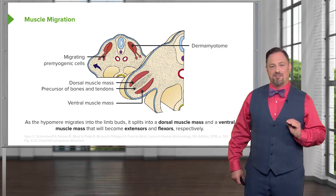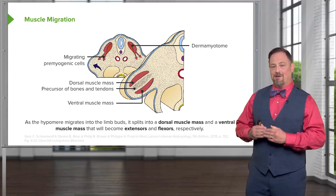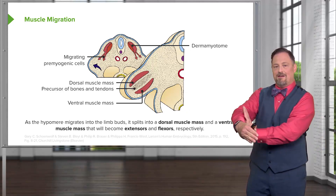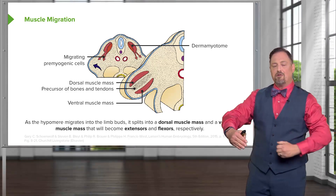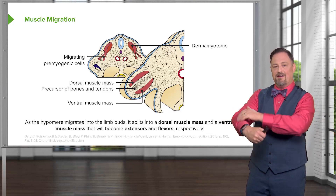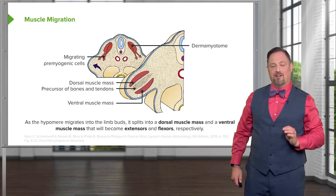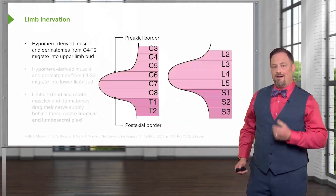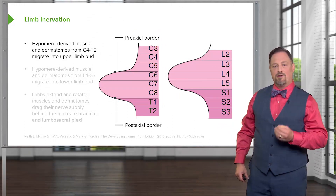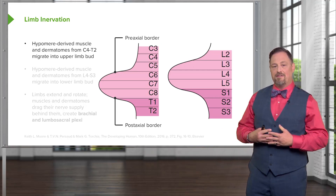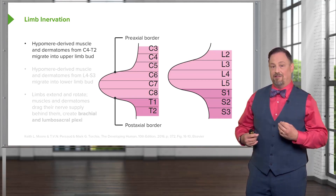The muscles of the hypomere that migrate into the limb buds separate yet again into a posterior mass and an anterior mass — dorsal and ventral masses. The ventral masses are going to become the flexor muscles and the dorsal muscle mass will become the extensor muscles, taking up residence on either side of the developing bones of the limb. The nerves initially are in a segmental layout, with C4 to T2 contributing nerves to the myotomes that migrate into the upper limb and L2 to S3 contributing to the muscles traveling into the lower limb.